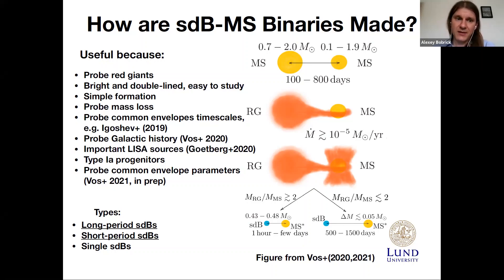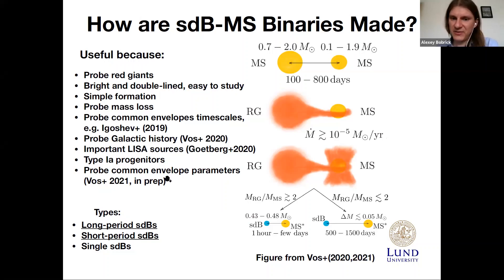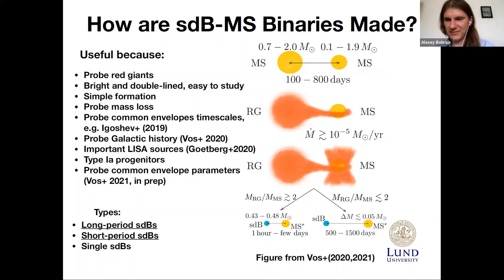Subdwarf B-binaries have recently been shown to constrain the timescales of common envelope events. They reflect galactic chemical evolution history. Short-period subdwarf B-binaries are important LISA sources of gravitational waves — actually the second most important source for the LISA community. Subdwarf B-binaries with wide companions are important Type Ia supernova progenitors. And short-period subdwarf B-binaries are also good probes of common envelope parameters in binary evolution.